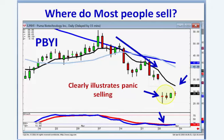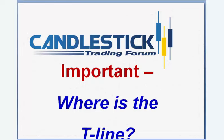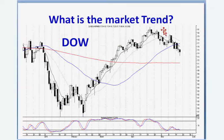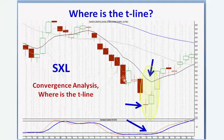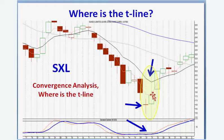Another important element that has come into the analysis using candlesticks is the T-line. The T-line is very important. The first criteria I use when scanning for trades is which way is the general market moving. If it's an uptrend, we're looking for scans on the bullish side; if it's a downtrend, we're looking for scans to the downside. The simple rule of the T-line is that we want to see a buy signal and a close above the T-line.